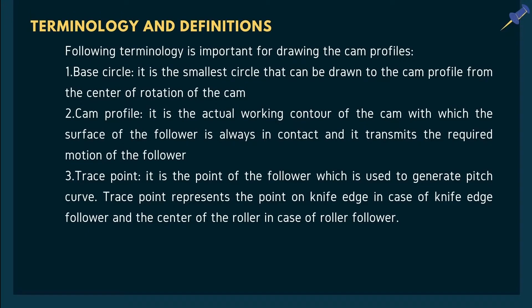The first term is base circle: it is the smallest circle that can be drawn to the CAM profile from the center of rotation of the CAM. Next is CAM profile: it is the actual working contour of the CAM with which the surface of the follower is always in contact, and it transmits the required motion to the follower. Third is trace point: it is the point of the follower used to generate the pitch curve. The trace point represents the sharp edge in the case of a knife edge follower and the center of the roller in the case of a roller follower.